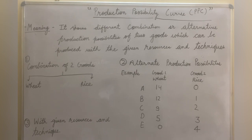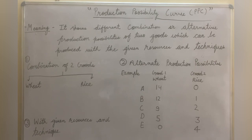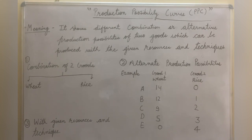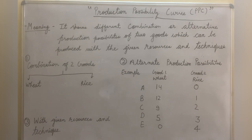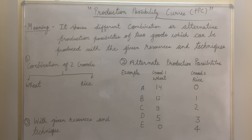He is sacrificing wheat — from 14, 12, 9, 5, and ultimately 0 — because he wants to produce rice from 0 to 4 kg. His land is not equally capable of growing rice, so he sacrifices more wheat to increase rice production. PPC includes three things: combination of two goods, alternative production possibilities, and given resources and techniques. This is the general meaning of PPC from the perspective of the producer.